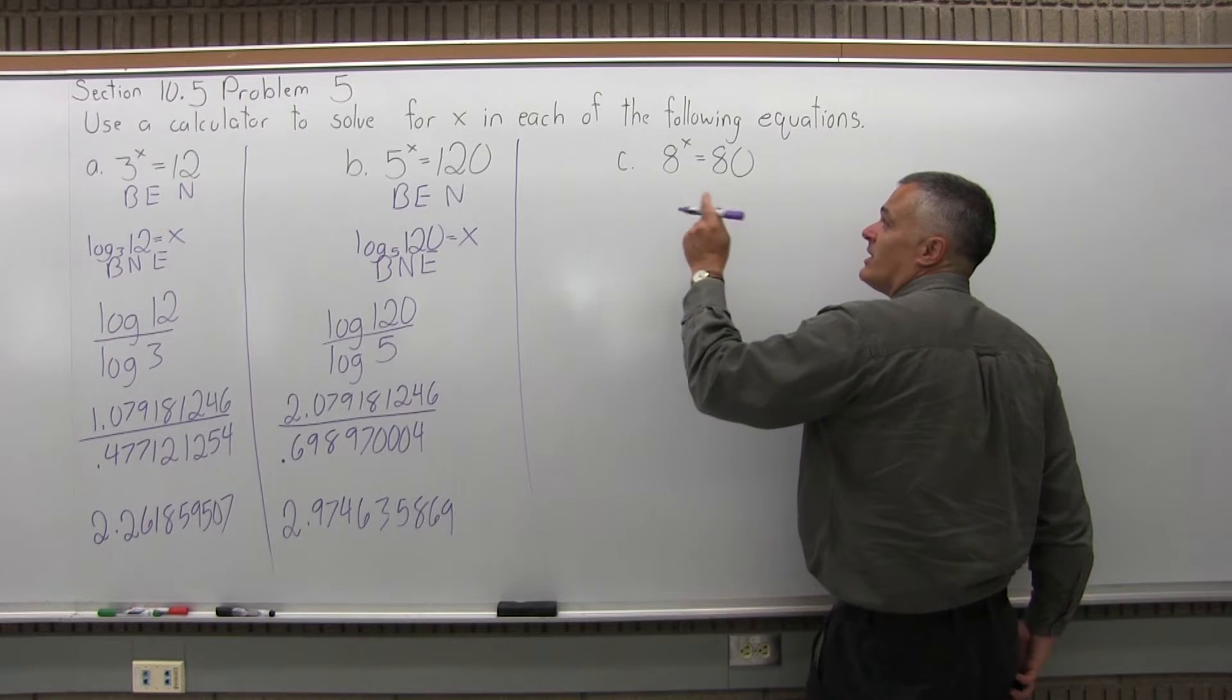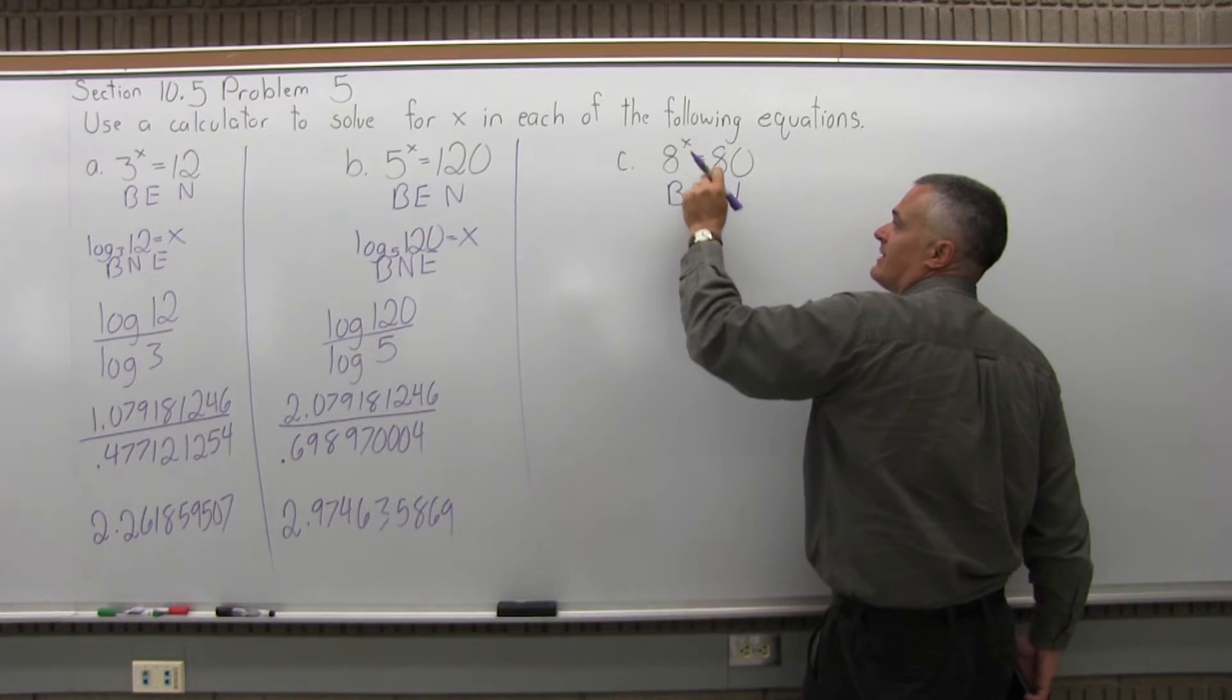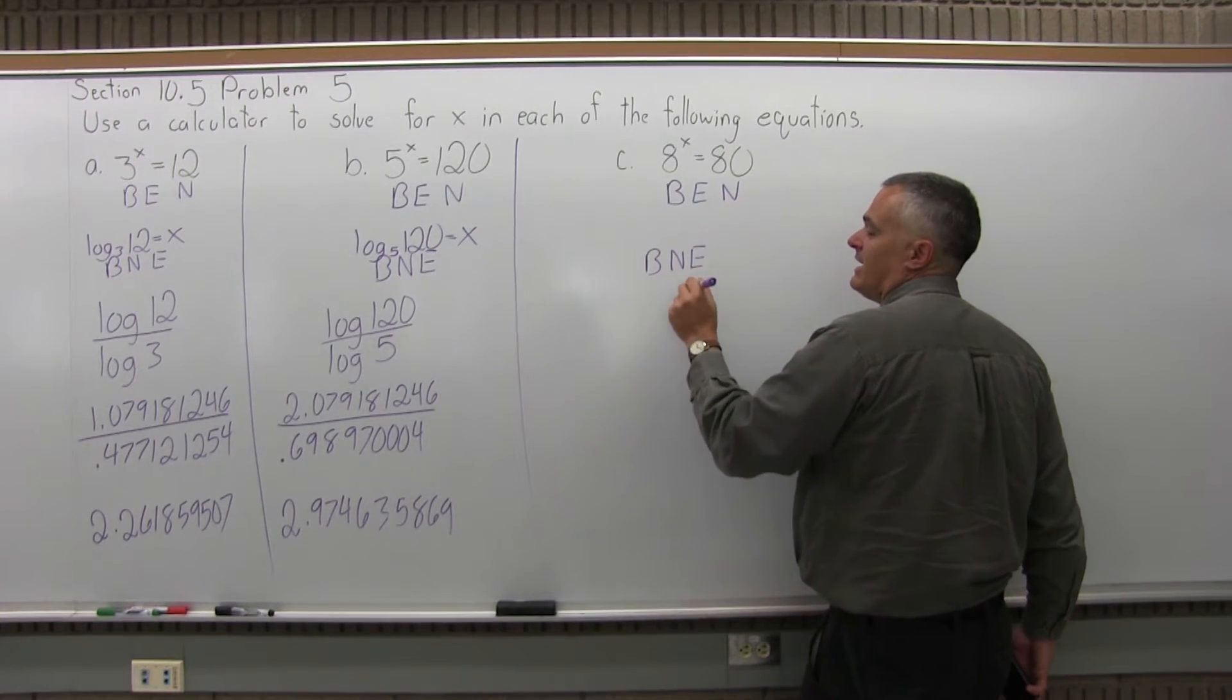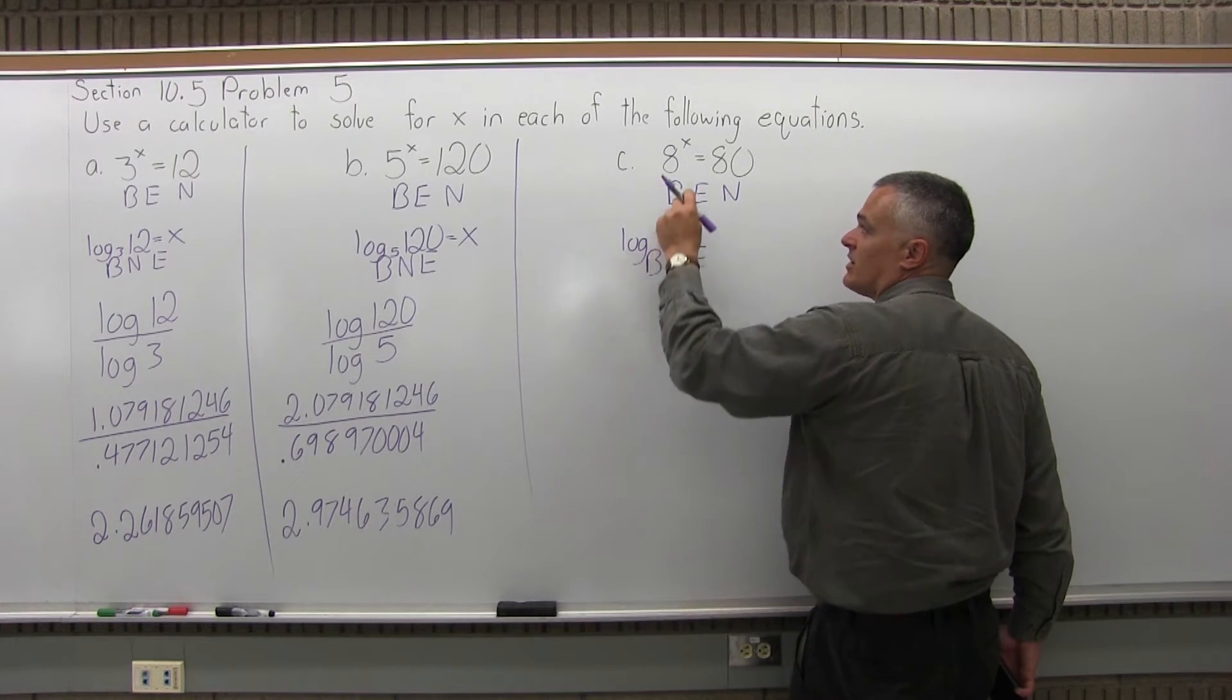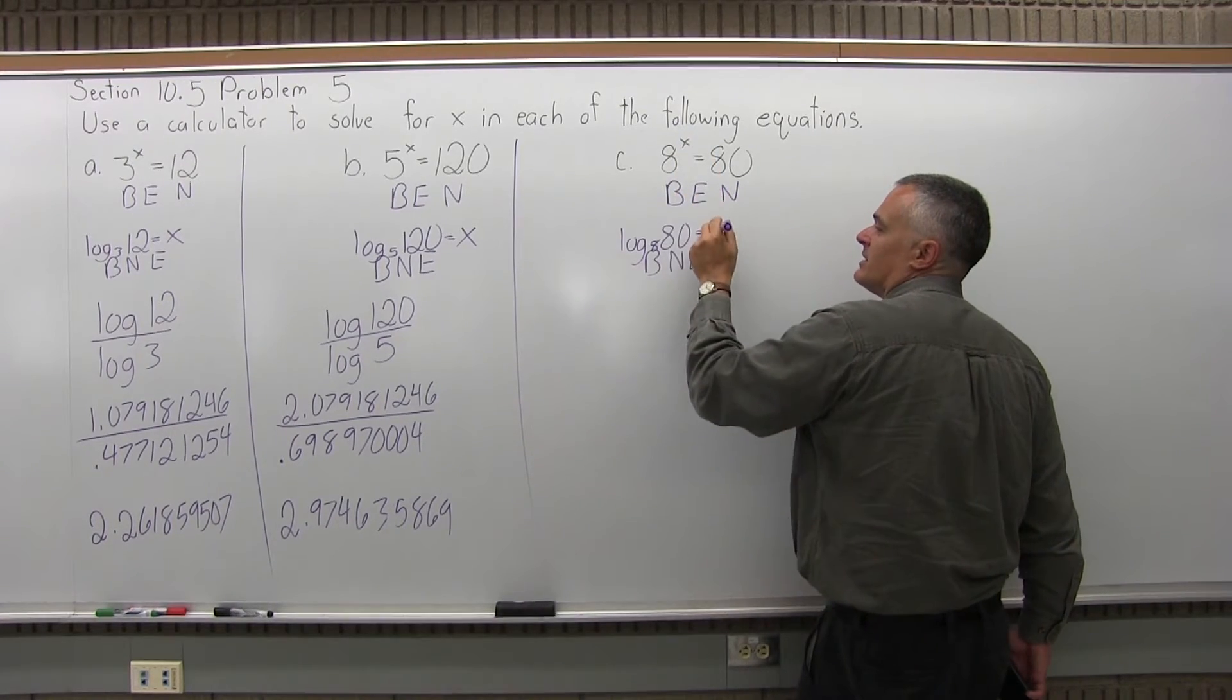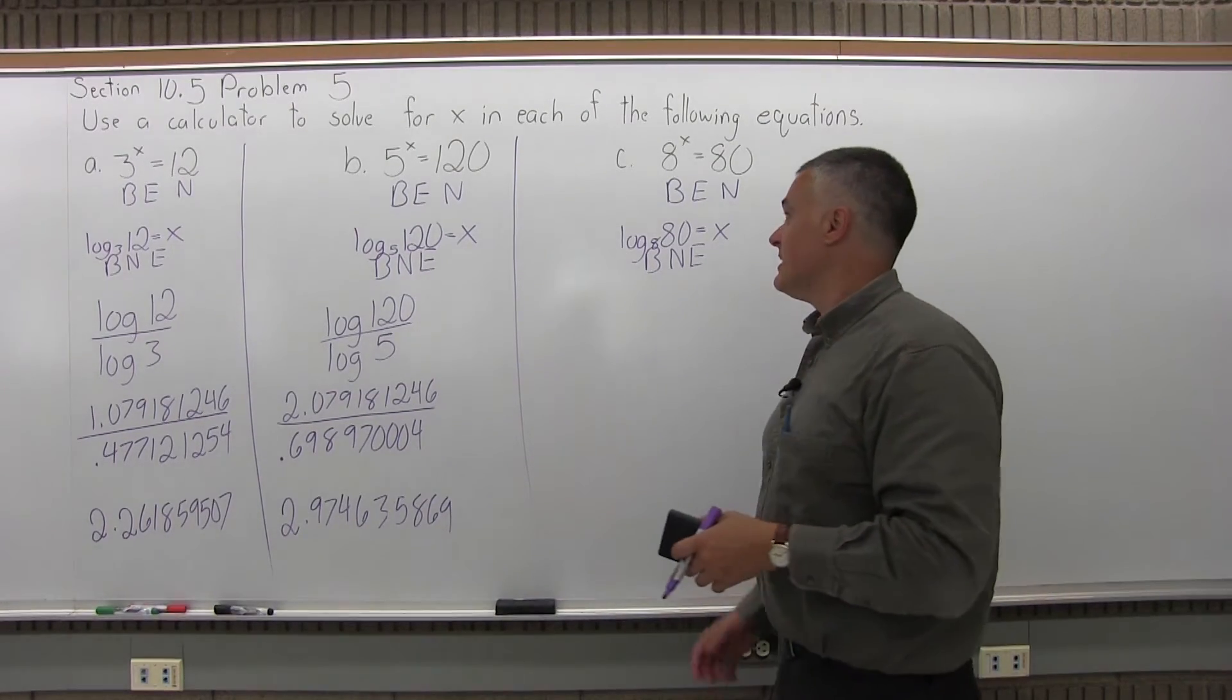8 to the x power equals 80 is the exponential form, which I write Ben for BEN, which stands for base exponent number. The base is 8, the exponent is x, and the number is 80. And I will switch that to the logarithmic form, BENNY, B-N-E for base number exponent. So I write the word log, I put the base as a subscript, the base is 8, then the number, the number is 80, then equals, and then the exponent, and the exponent is x, the unknown value. So I need to solve log base 8 of 80 equals x, and that'll tell me the answer to the problem.